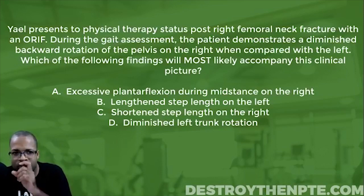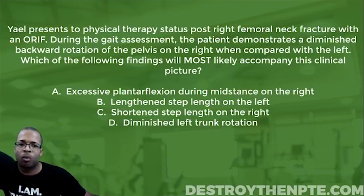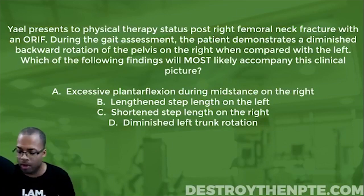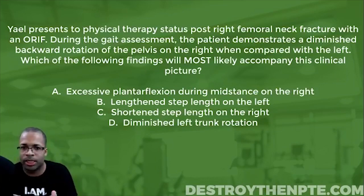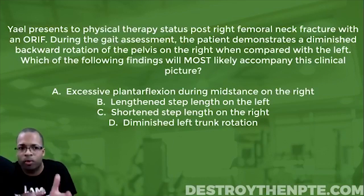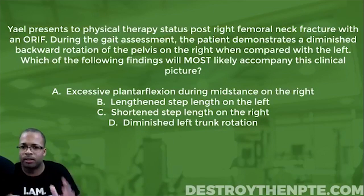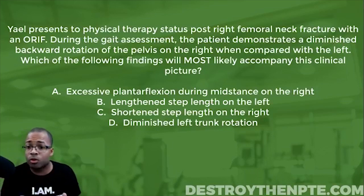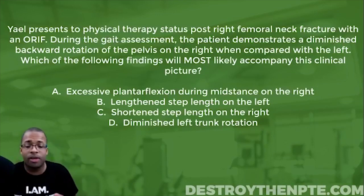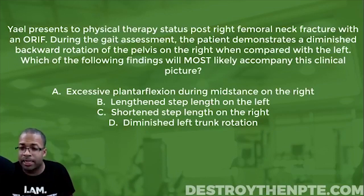The patient demonstrates diminished backward rotation of the pelvis on the right when compared to the left. We have to slow down and think about what this really means, because backward rotation can be confused across different planes of motion — the sagittal plane, transverse plane, and coronal or frontal plane. Anterior and posterior pelvic tilt is in the sagittal plane. Backward and forward rotation of the pelvis refers to the transverse plane.